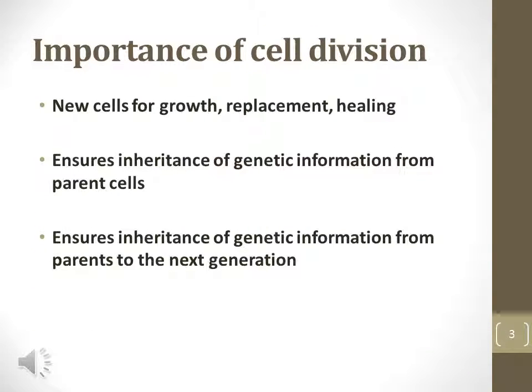Cell division is considered to be a reproduction event in single-celled organisms, and cell division is important for growth and healing in multicellular organisms. Genetic information contained in chromosomes of DNA must be replicated exactly for the daughter cells to be successful. This means the same genetic material is contained in all daughter cells. For example, all daughter cells of a human zygote contain an identical DNA sequence, although genes are expressed differently, so hundreds of cell types are derived by genetic clones.